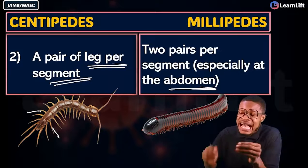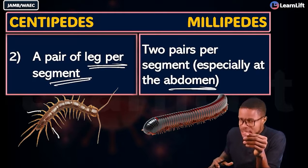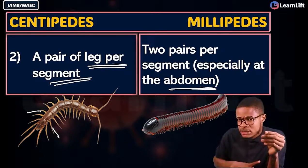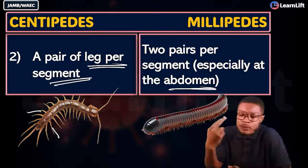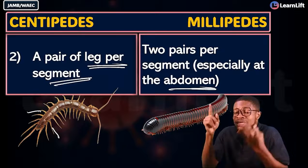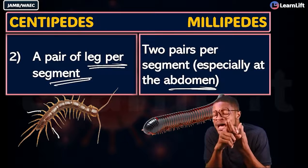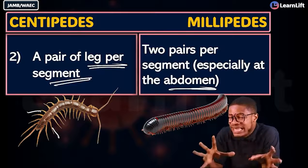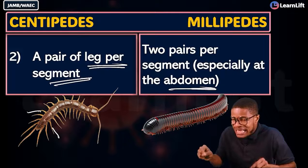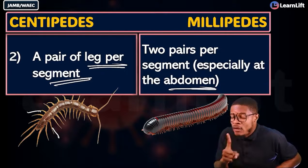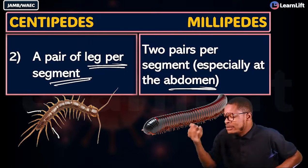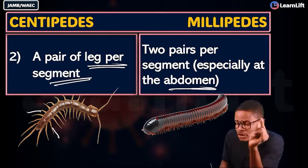Millipedes have a head, thorax, and abdomen. The head has four structures: simple eyes called ocelli, antennae, mandibles, and maxillae. In the thoracic region, there are four segments each with one pair of legs. In the abdomen, each segment has two pairs of legs.